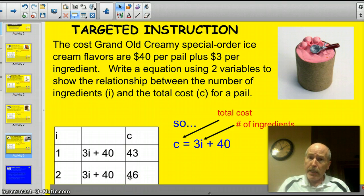So it seems to make sense to me. All right, so the total cost, then, would be the function, $3 times the number of ingredients, plus 40, or C equals 3i plus 40.